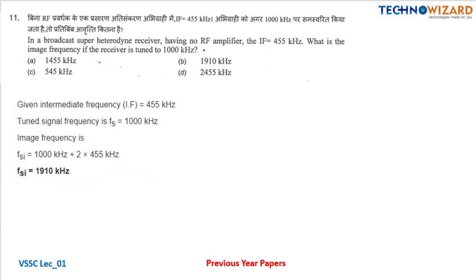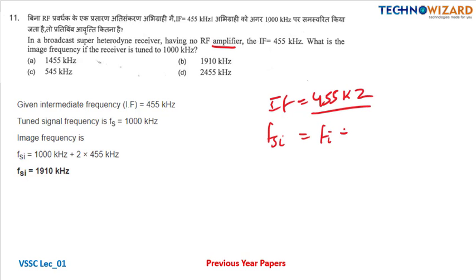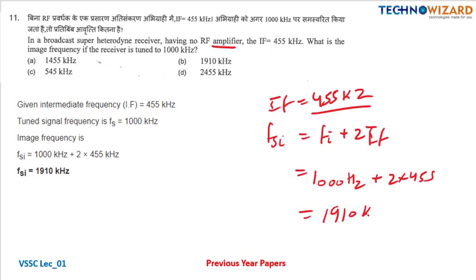Question number eleven: a superheterodyne receiver with no RF amplifier, intermediate frequency given as 455 kilohertz. The image frequency equals fi plus 2 times IF. Fi is 1000 kilohertz plus twice of 455, which equals 1910 kilohertz as the correct answer. This is an important question I have covered previously in test series as well.